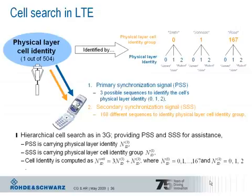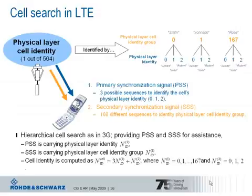A jingle to remember this principle is to think about first names and surnames. The most common English surname, according to statistics, is Smith, which would correspond to physical layer cell identity group number 0. The physical layer identity aligns with the most common first names, for example James, John and Robert. These two types of information are transmitted using two signals — primary and secondary synchronization signal — where the primary synchronization signal contains the physical layer identity (the first name) and the secondary synchronization signal contains the physical layer cell identity group (the surname).